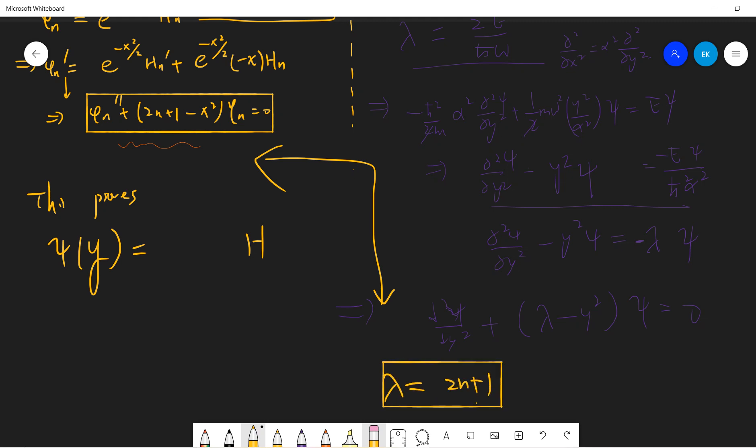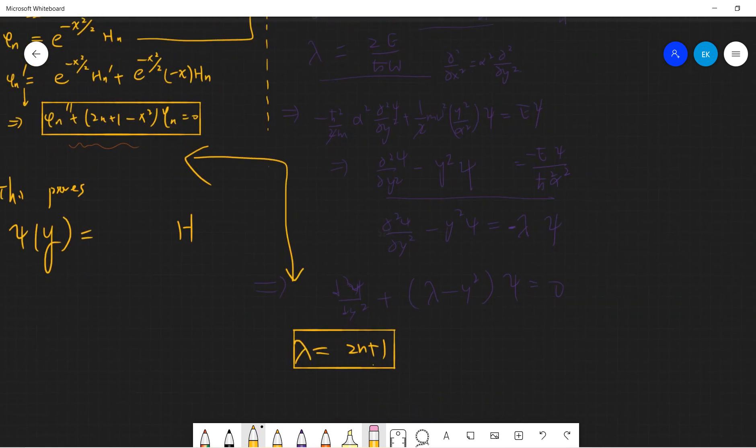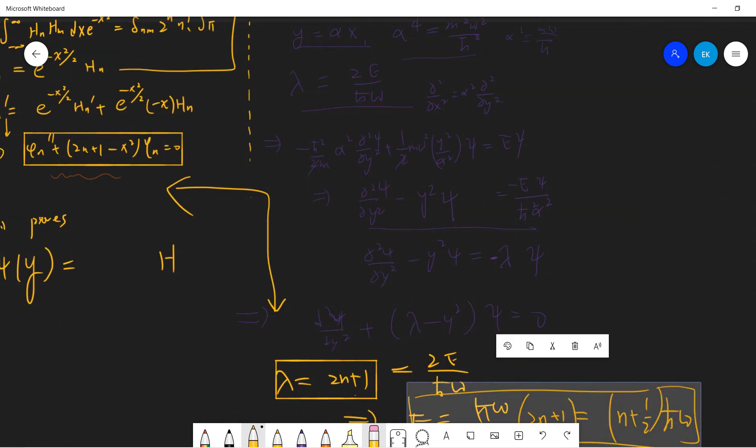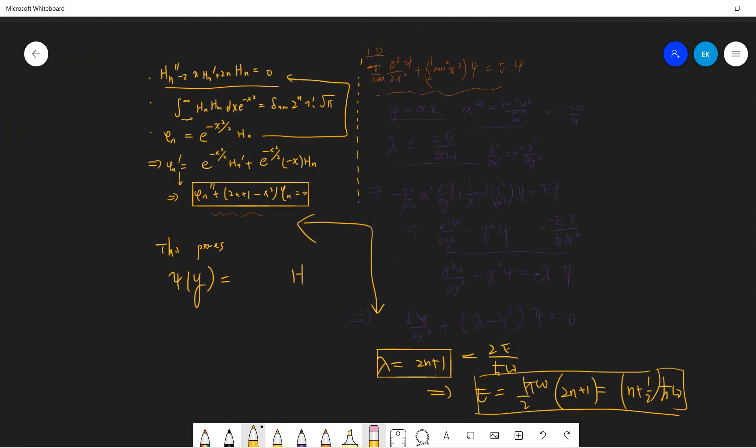So this is the final result. If you plug lambda is 2n plus 1, lambda is 2E divided by h bar omega, so this shows that the E is just half h bar omega times 2n plus 1, or basically people like n plus half h bar omega. But basically this is the common quantum mechanics result you must remember this. So the result is H psi of y, just H psi of y, but there is a normalization factor here, so we take a square root of the normalization.